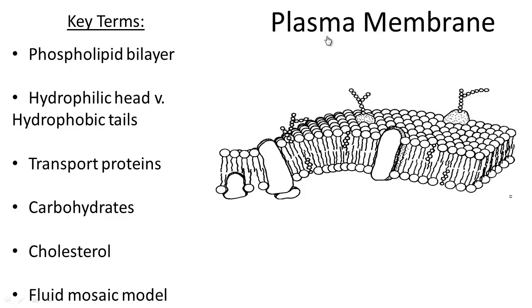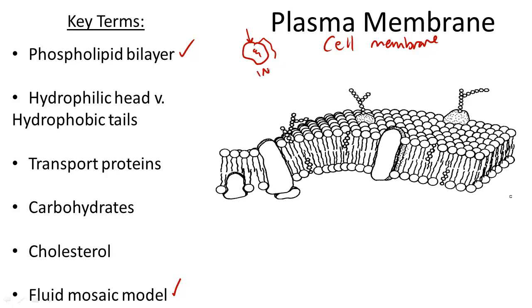The plasma membrane, also known as the cell membrane, the phospholipid bilayer, and the fluid mosaic model, is the structure that surrounds a cell on the outside. It controls what enters and what exits the cell. Every cell has a plasma membrane, and every organelle is surrounded by one.